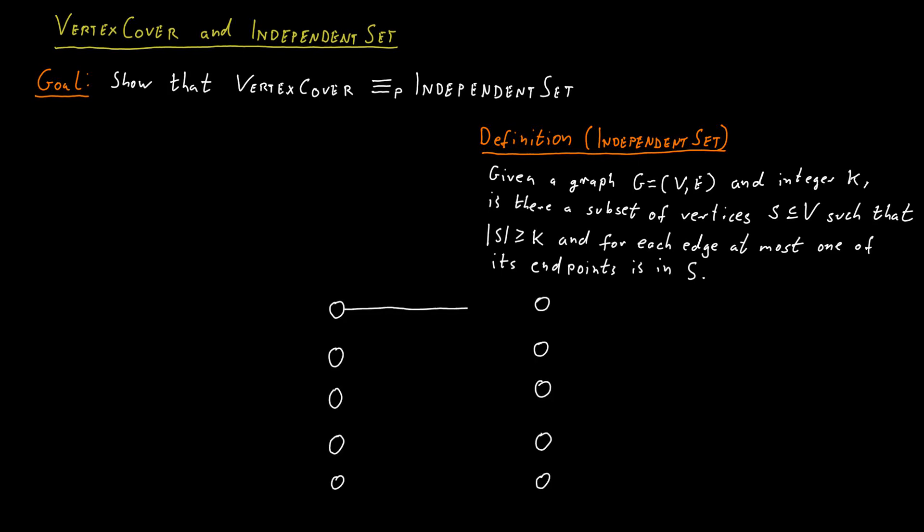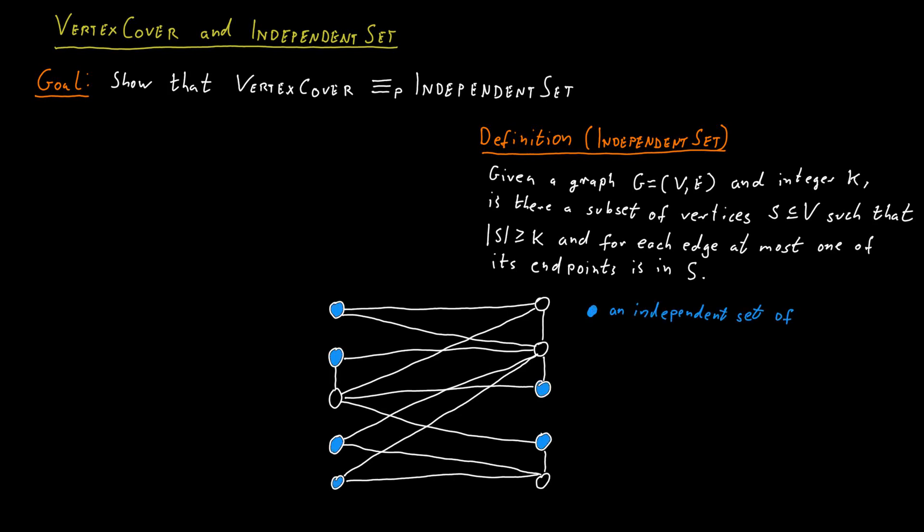Here's an example. This is a simple graph, and an independent set in this graph would be this—an independent set of size 6. This graph does not have an independent set of size 7. So if we choose K equal to 6, the answer would be yes. If we choose 7, the answer would be no.